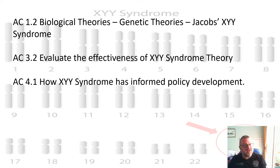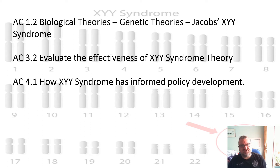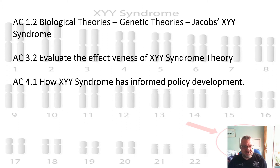Today we're going to look at some more biological theories, again in the subcategory of genetic theories. This PowerPoint is going to look at Jacobs's XYY syndrome. We're going to evaluate its effectiveness and we're also going to look at how the syndrome has informed policy development.